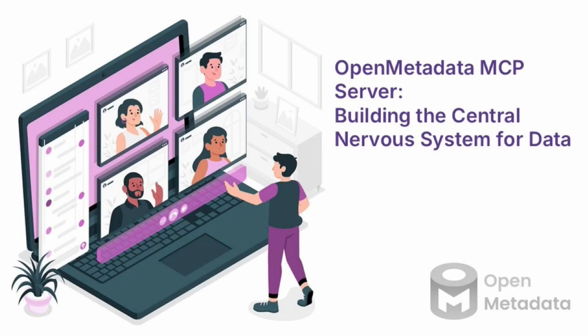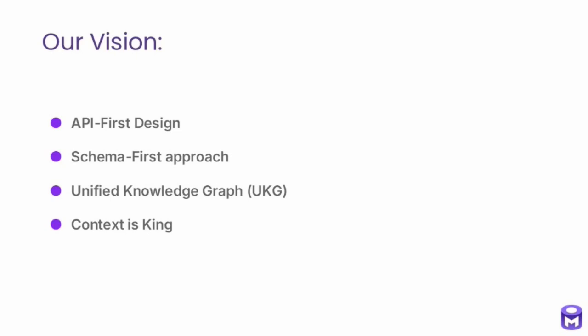Version 1.8 of OpenMetadata and Collate makes the integrated MCP server available to the general public. Our vision at OpenMetadata is to enable data to flow intelligently, contextually, and seamlessly across organizations like a nervous system. Authorized users should access data effortlessly, even via LLMs. To achieve this, OpenMetadata adopts an API-first approach — every feature and interaction is built as a robust, secure API. We use a schema-first design where every entity, relationship, and metadata change follows a well-defined schema, ensuring governance, validation, and transparency by design.